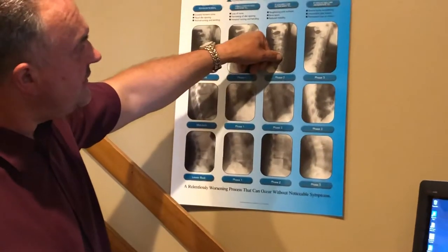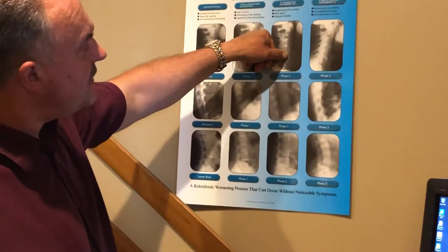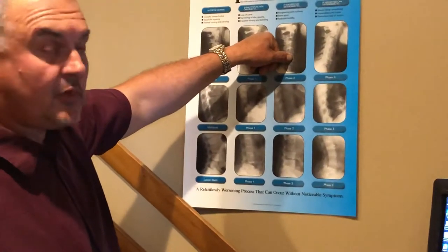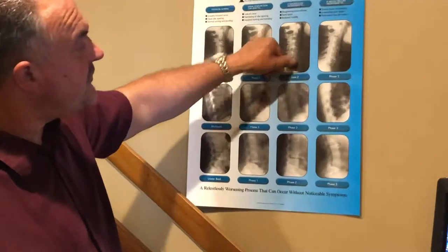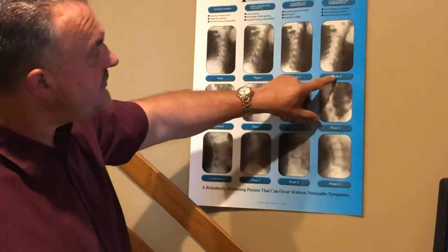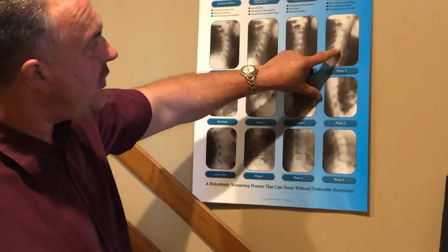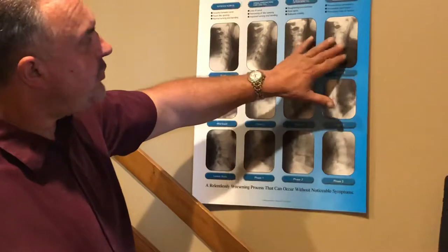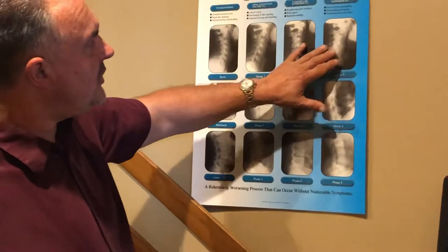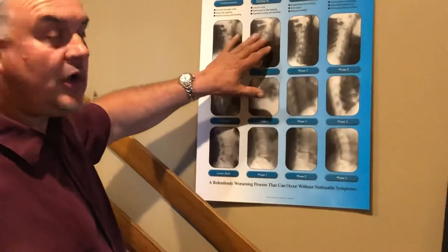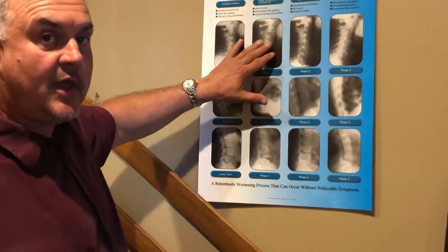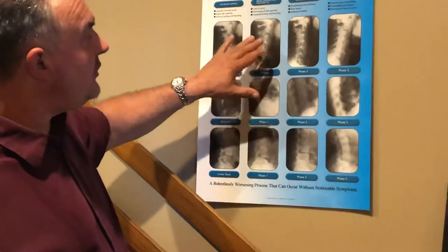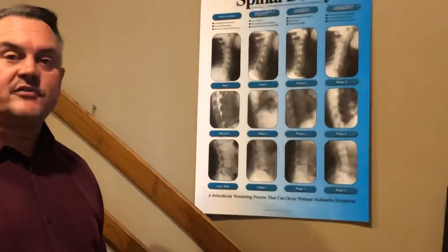You can see how that vertebra there is actually starting to form osteophytic spurs. And then phase three, unfortunately, it's almost bone on bone. But if this person were to start chiropractic care at this point, believe it or not, it would be able to help slow that progress down.